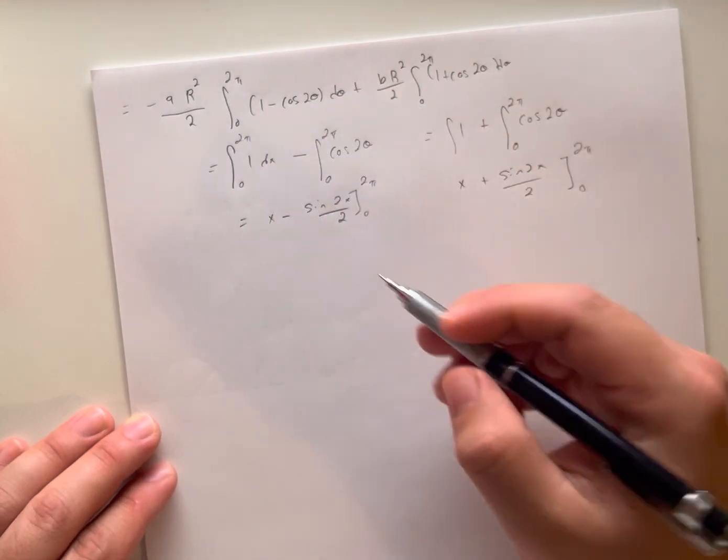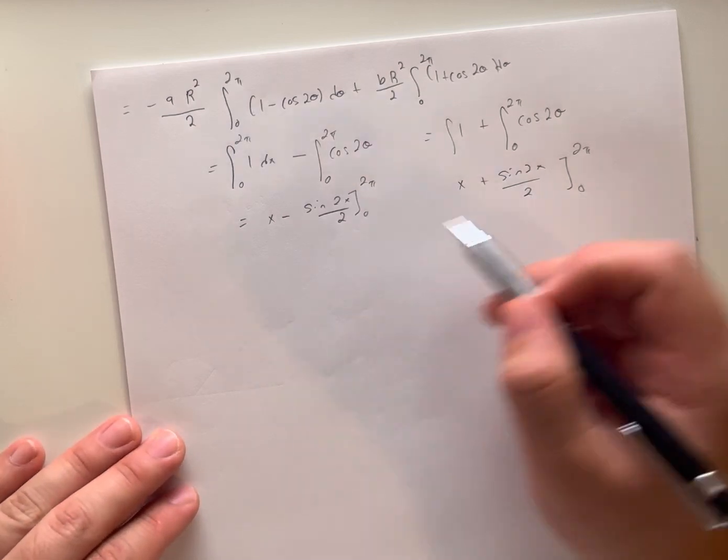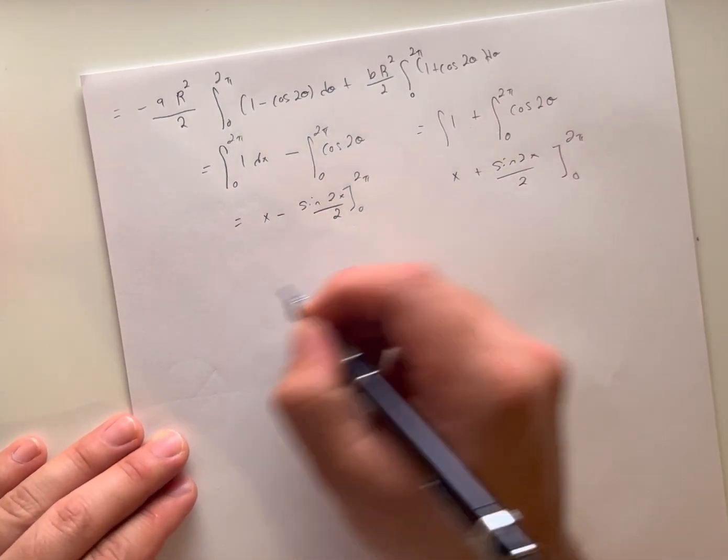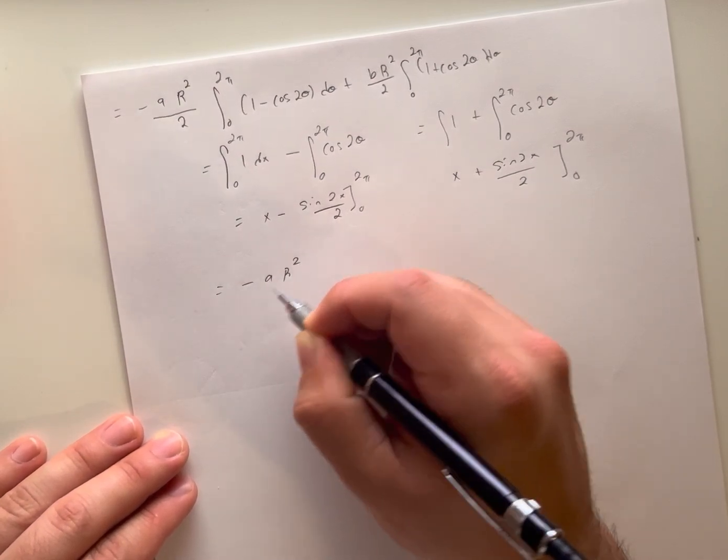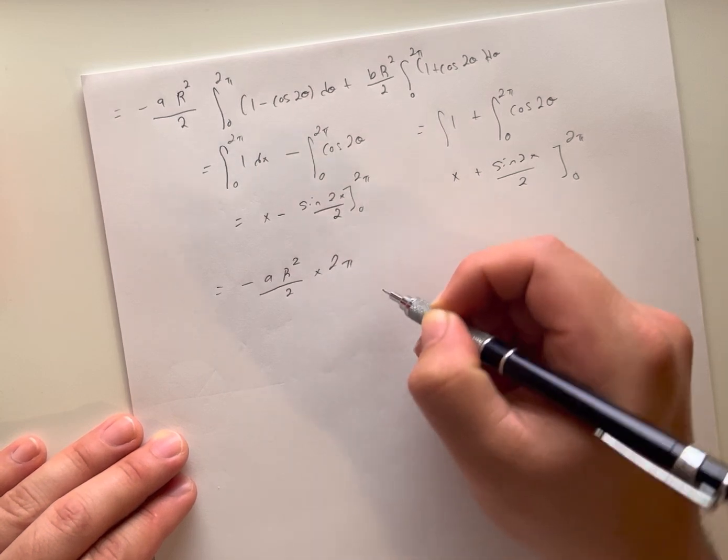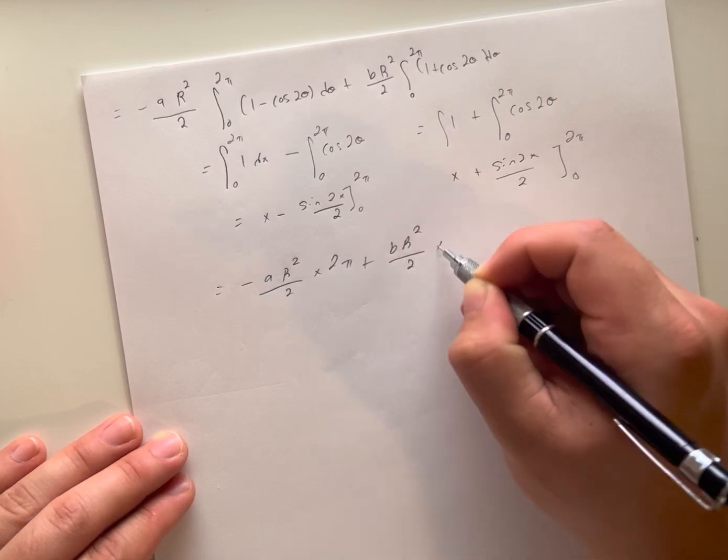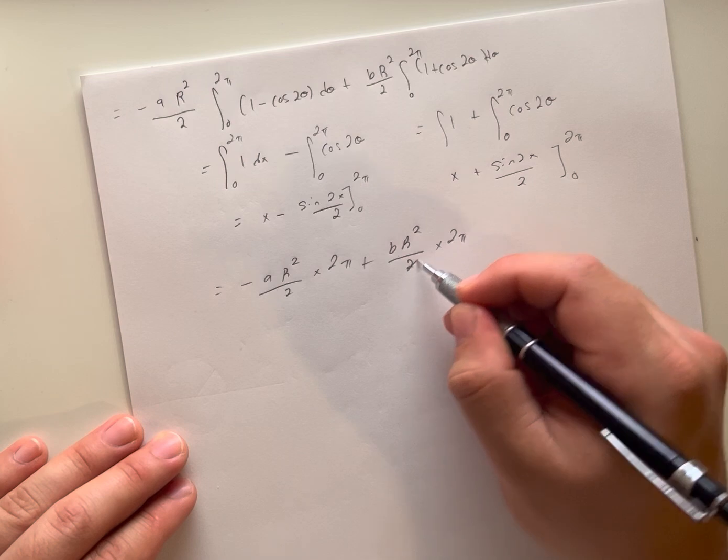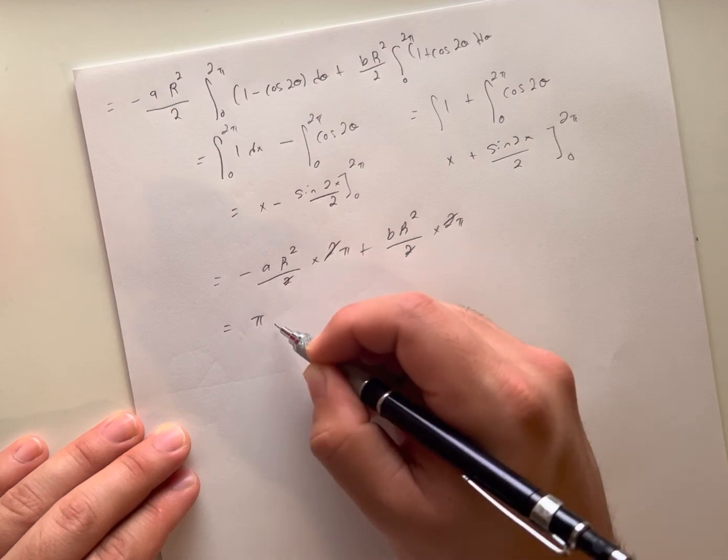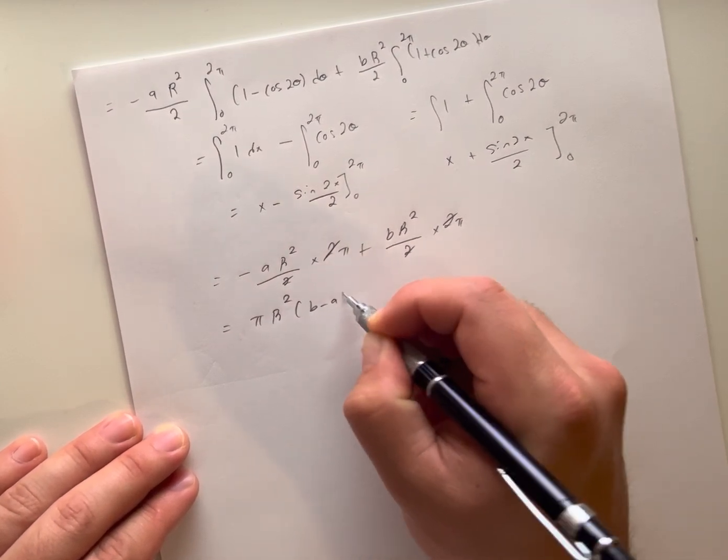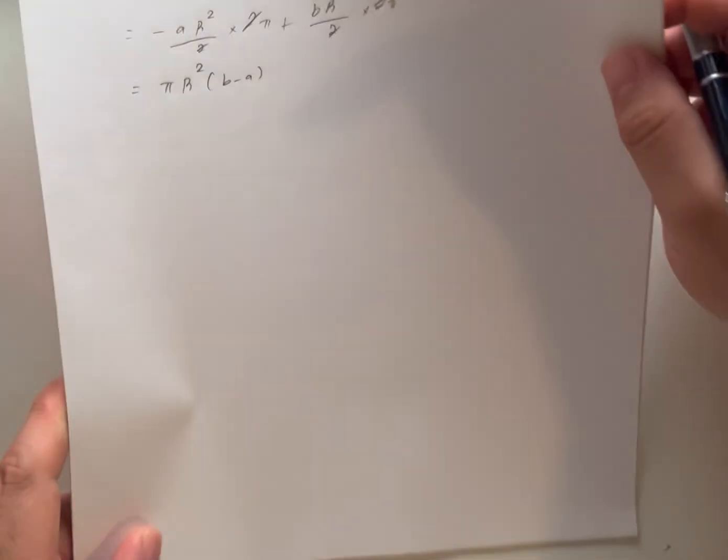We know that for any multiple of 2*pi, sine will go to 0, and sine of 0 is always 0. So when we plug in 2*pi, we just end up with 2*pi, giving us negative (a*R^2/2)*2*pi plus (b*R^2/2)*2*pi. Simplifying this down, the 2's cancel, giving us pi*R^2*(b - a). This is for when we do the line integral.